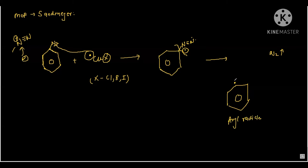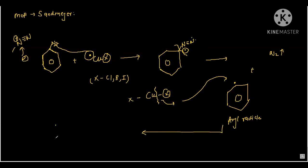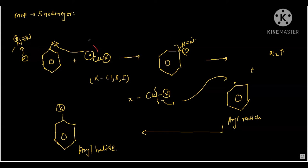Along with the nitrogen leaving, there is the formation of an aryl radical. Nitrogen is the leaving group. Now copper reacts with X, and once X leaves there is a cleavage — X forms a bond with this free radical, resulting in the formation of aryl halide. The copper donates the electron toward the nitrogen by SET mechanism — that is Single Electron Transfer — and once there is a single electron transfer, X is released and the further mechanism proceeds, forming the aryl halide product.